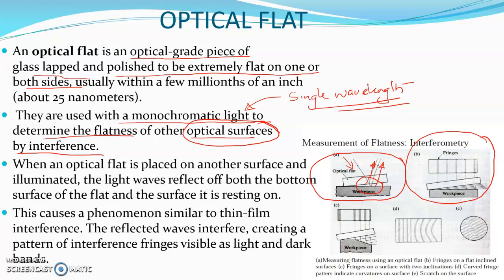If the workpiece is perfectly flat, the fringes will be at equal distances, and this spacing will be comparatively larger. In picture C, at a particular portion the fringes come very close to each other — that is an indication that the workpiece has a slight taper. The closeness of the fringes is an indication of taper in the workpiece.